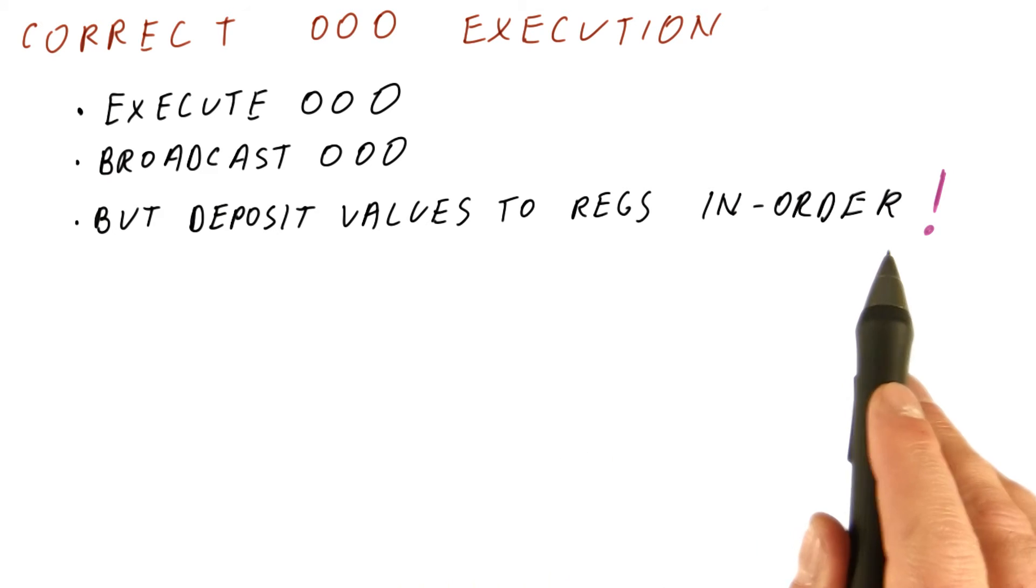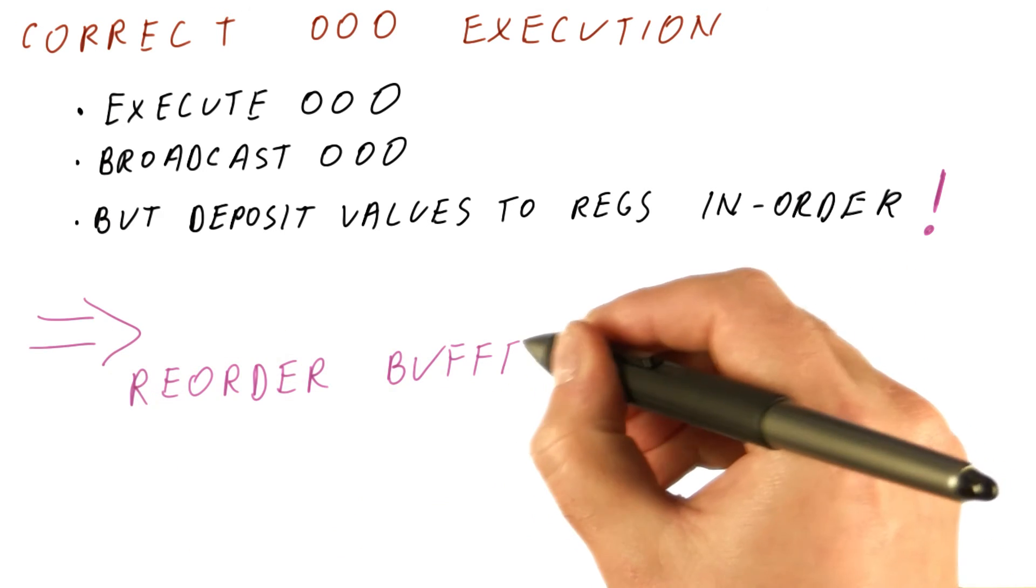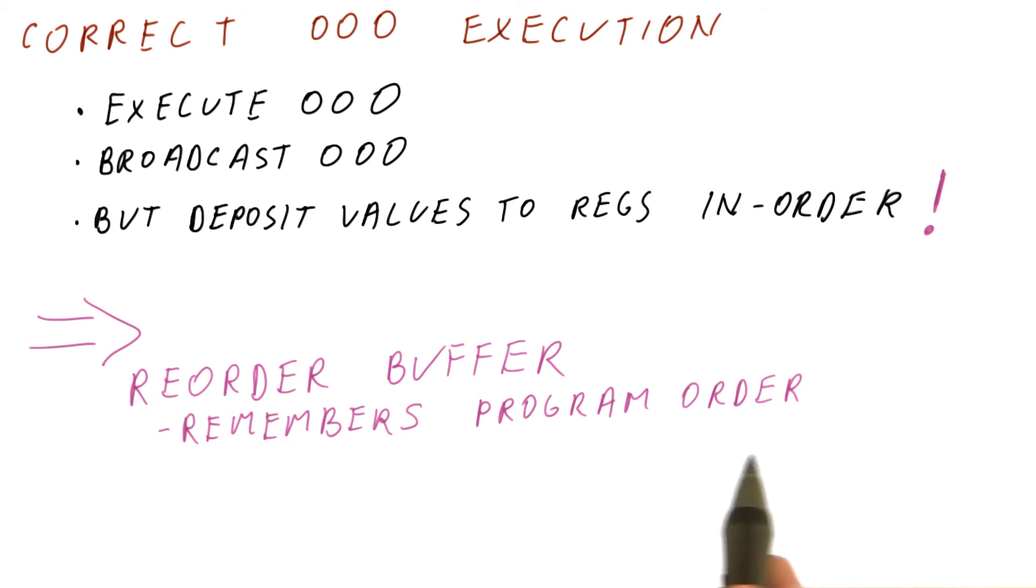In Tomasulo's algorithm, this is not happening in order, which is why we have a problem. What we need is a structure called a reorder buffer. Even after issue, it remembers the program order and keeps the results of instructions until they're safe to write to registers.